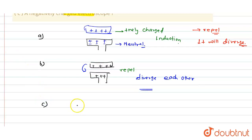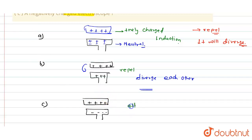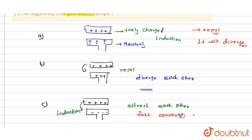For Part C — a negatively charged electroscope. This electroscope is negatively charged, and a positively charged body is brought near it. There is attraction between the positive and negative charges. Due to induction, the charge distribution changes — the leaves first converge and then may diverge. This is the required answer.